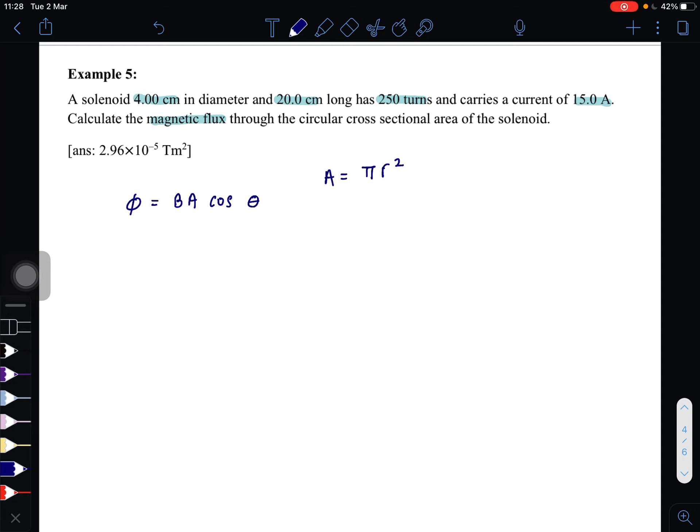But now, in order to find this, we don't have the value for B, which is the magnetic field. So using the formula for magnetic field for a solenoid: B will be equal to μ₀N times the current divided by the length of the solenoid.